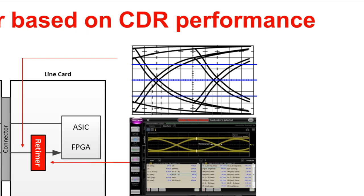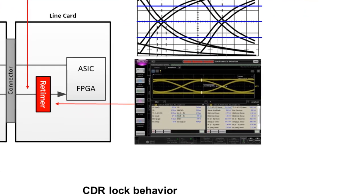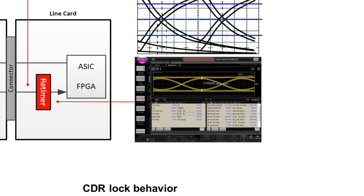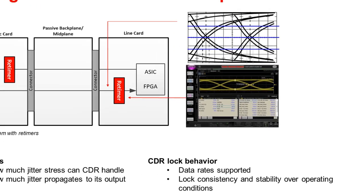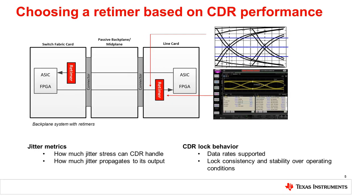A good retimer will also output low jitter to the downstream ASIC receiver. In terms of CDR lock behavior, a system developer will have a list of frequencies that the CDR would need to be able to support. Furthermore, the CDR's ability to achieve and maintain frequency lock in a system will be tested across different operating conditions, including temperature and voltage. In summary, the decision usually comes down to jitter metrics: how much jitter stress the CDR can handle, and how much jitter propagates to the output.